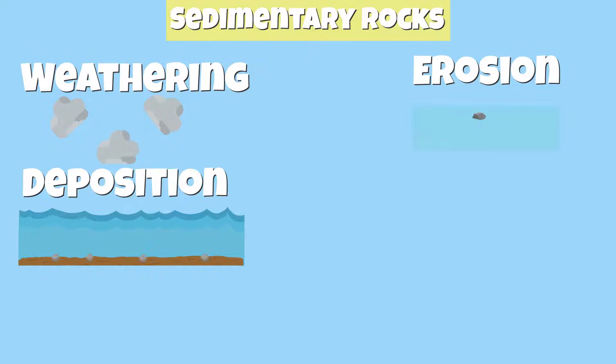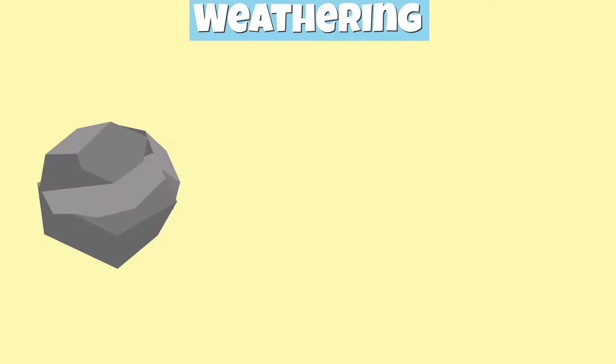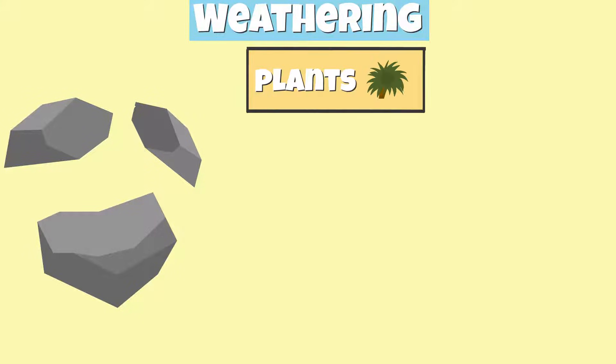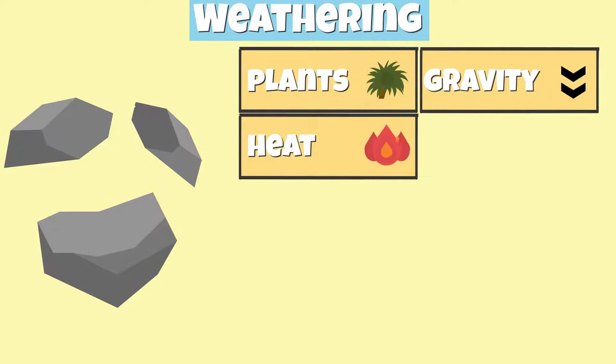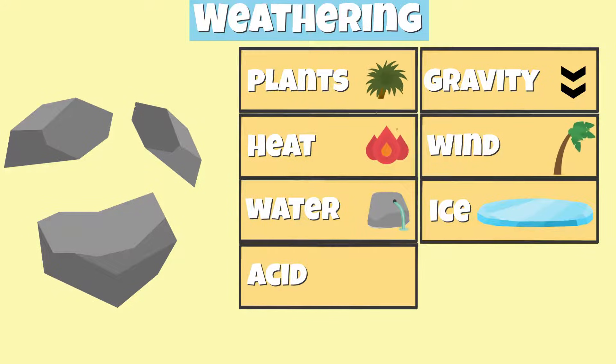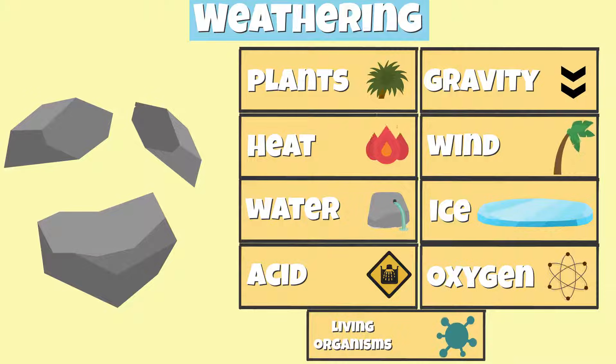Sedimentary rocks are formed through the process of weathering, erosion, deposition, compaction, and cementation. Weathering is the process of rocks being broken down into smaller rocks by growing plants, gravity, heat, wind, water, ice, acid, oxygen, and living organisms.